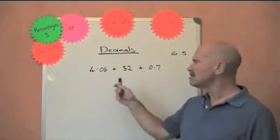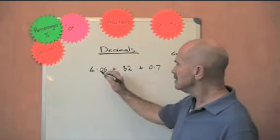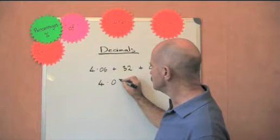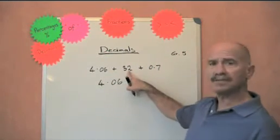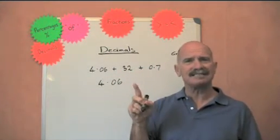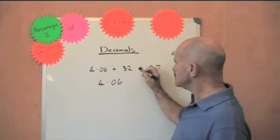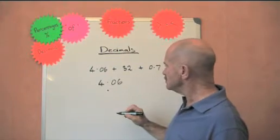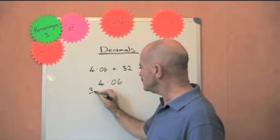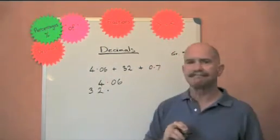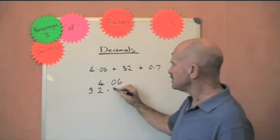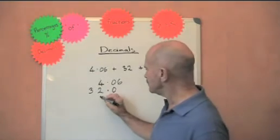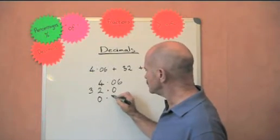I threw in a whole number here. Let's have a look what happens. We have 4.06. The next number we have to put down is 32. Now 32 is 3 tens and 2 ones. The decimal point would be there. So we have to put the decimal point in. It helps. And we put 32, 3 tens and 2 ones over there. And if you'd like you can put a 0. Now we have to do 0.7. So that's 0.7.